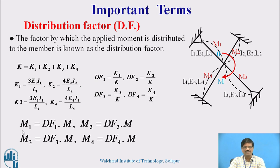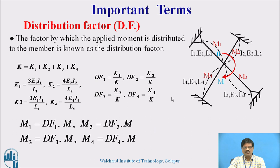Once we get the distribution factors, we can find the moment transferred to each member. For example, M1 = DF1 × M, meaning some fraction of M is transferred to member 1 — that fraction is the distribution factor. M2, M3, and M4 follow the same logic. Importantly, all distribution factors are fractions and the summation of all distribution factors must always equal 1. We will learn in detail how distribution factors are determined when we discuss numerical examples.